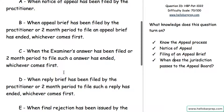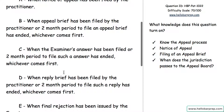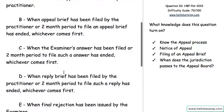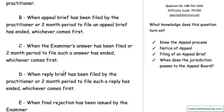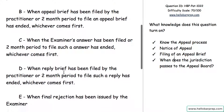Answer choice C: when the examiner's answer has been filed. Not yet — you still have a two-month period. Even if the examiner doesn't file an answer for two months, you still have the option of replying or amending your appeal brief at that point. That is the time you have until jurisdiction passes over. So C is incorrect.